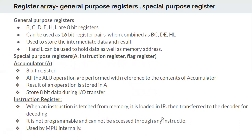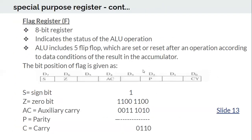The instruction register: once an instruction is fetched from memory, it is loaded into the instruction register where it is decoded — meaning the microprocessor understands the instruction and performs the required operation. It is not programmable; programmers do not have access to it. It is accessed internally by the microprocessor. The flag register is an 8-bit register, but within it only 5 bits are used as flag bits.